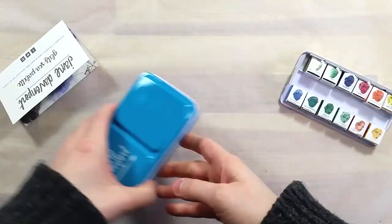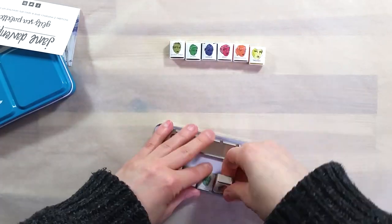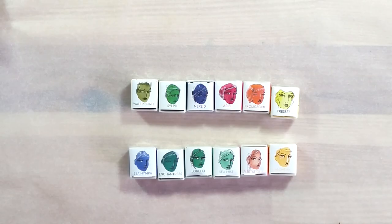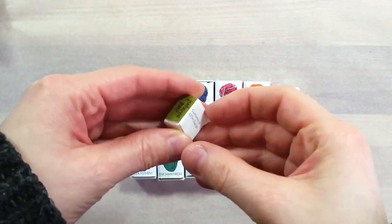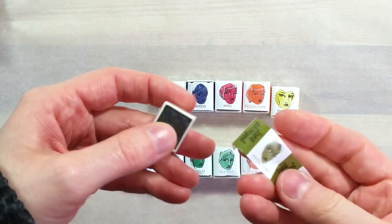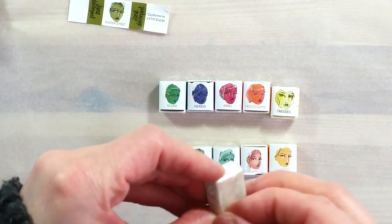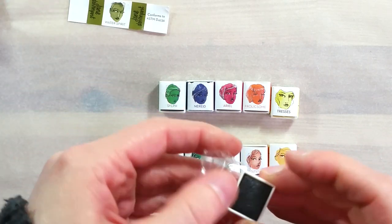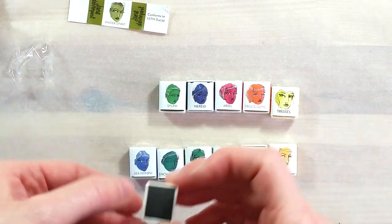Each pan is nicely wrapped, first in plastic, then with a wrap-around paper to identify the pan. The plastic pans themselves are not labeled, so it might be a good idea to manually label them when you unwrap them, to avoid mixing up the colors.